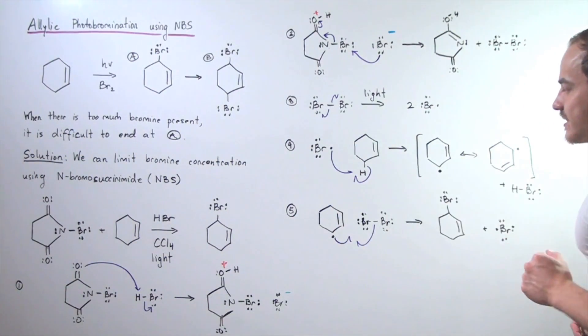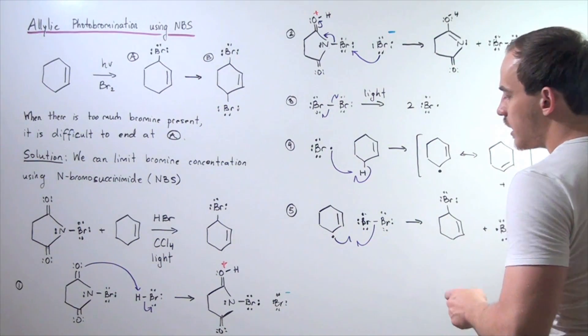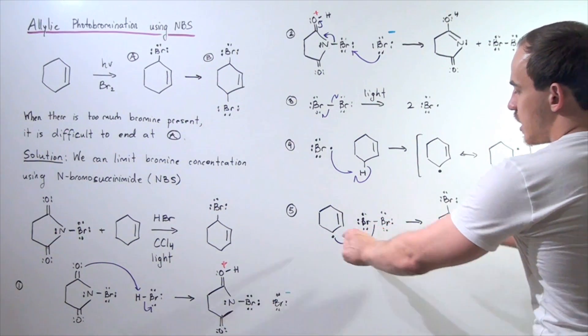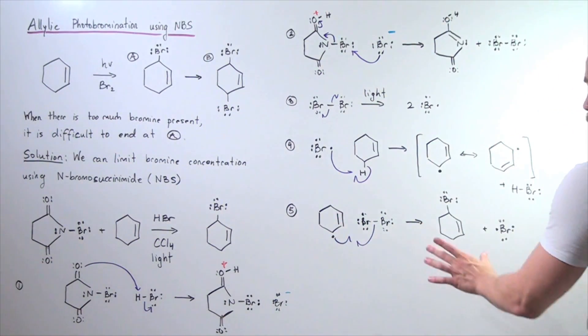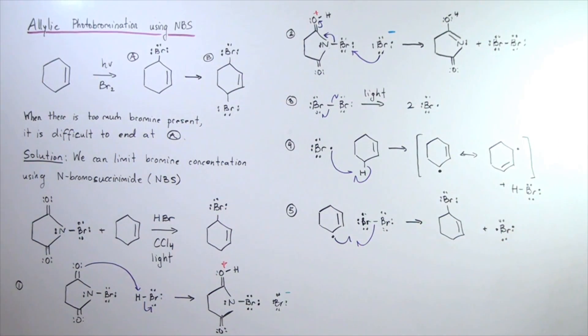Now, what happens in the last step is we have another bromine molecule interact with this chain-carrying radical. A lone pair of electrons and a lone pair of electrons from this interact, forming a bond, forming this final product, A, along with our chain-carrying bromine.